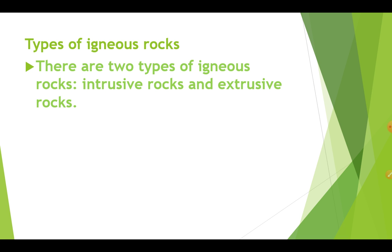Our second type of igneous rock is extrusive igneous rock. It is formed from molten magma coming from the interior of the earth — meaning the molten magma comes out on the surface of the earth and cools down. It rapidly cools down and becomes solid. They have a very fine grain structure. For example, basalt. The Deccan Plateau is an example of basalt rock.